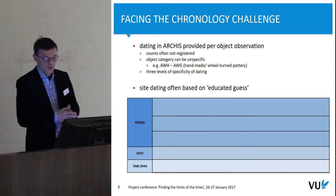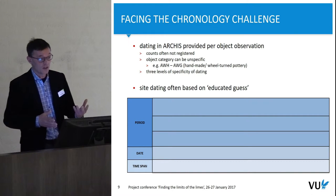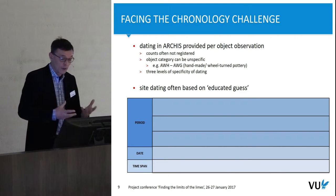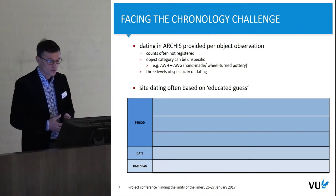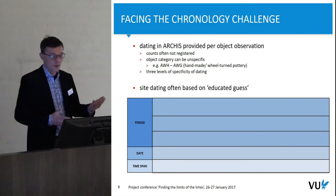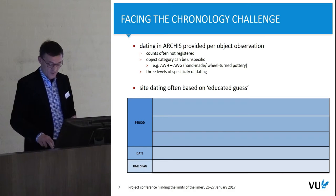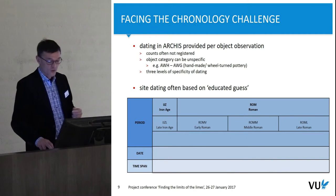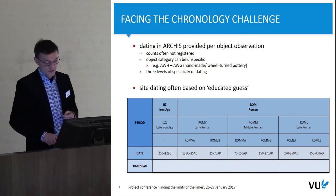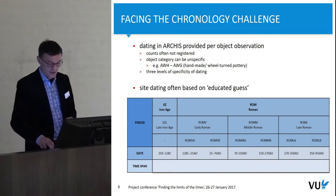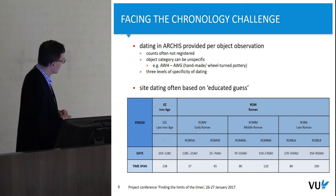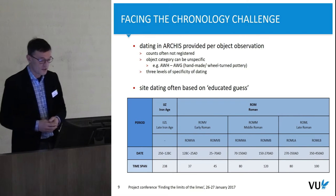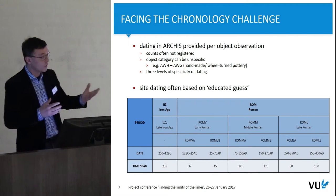Looking again at the archaeological survey data, we were thinking about the chronology issue. If you look at what is in the national database, there are various ways of registering — sometimes people don't count the number of sherds, sometimes they are very unspecific in describing what they found. The system also has three levels of specificity of dating. You could have Iron Age Roman, or a distinction of three Roman periods or even six Roman periods, each with their own time span. If something is dated Middle Roman B it could cover 120 years; if dated Early Roman A, it could cover only 37 years.